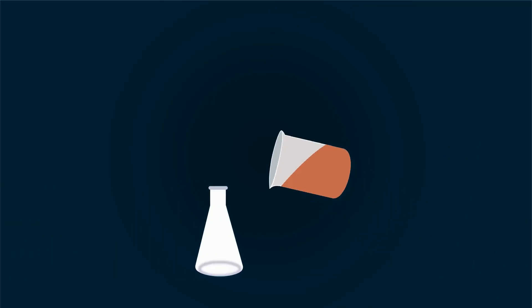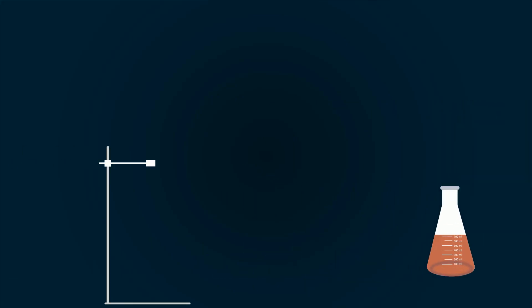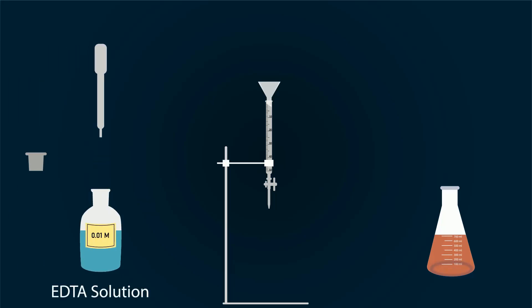Now put the solution into the conical flask. Now we have to start titration. For this, take a stand and add burette on it. Now with the help of a funnel, add 0.01 molar solution of EDTA into the burette up to the 0 point.